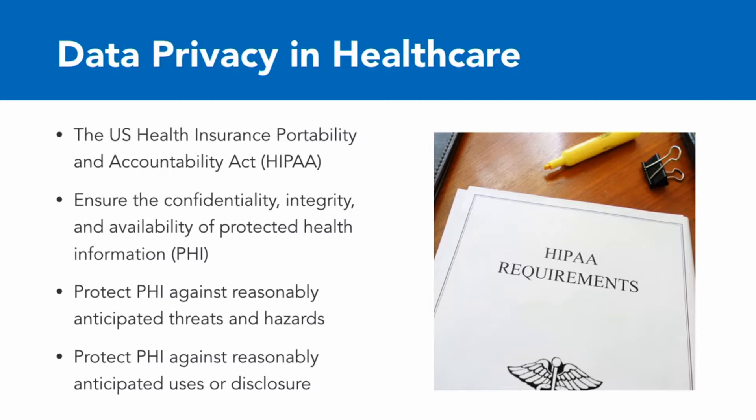Number one, you need to ensure the confidentiality, integrity, and availability of protected health information. You also need to protect that protected health information against reasonably anticipated threats and hazards — you can't anticipate absolutely everything, but you have to be thoughtful and you can't be negligent. Similarly, you need to protect the health information against reasonably anticipated uses or disclosures, though you may not be able to protect it against every contingency.